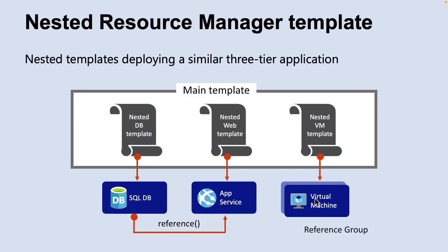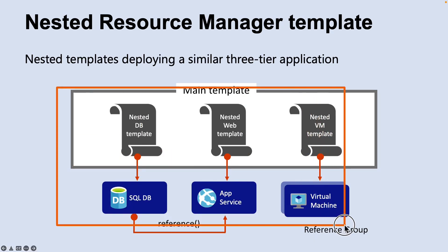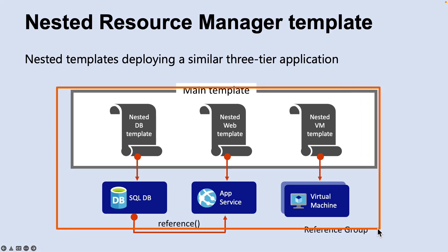We also need to understand nested Resource Manager templates. To deploy complex solutions, you can break your Azure Resource Manager templates into many related templates and deploy them together through a main template. The related templates can be separate files or template syntax embedded within the main template. This example shows how to deploy a three-tier solution through a parent template that includes three nested templates. If your tiers have separate lifecycles, you can deploy them to separate resource groups. Note that resources can still be linked to resources in other resource groups.